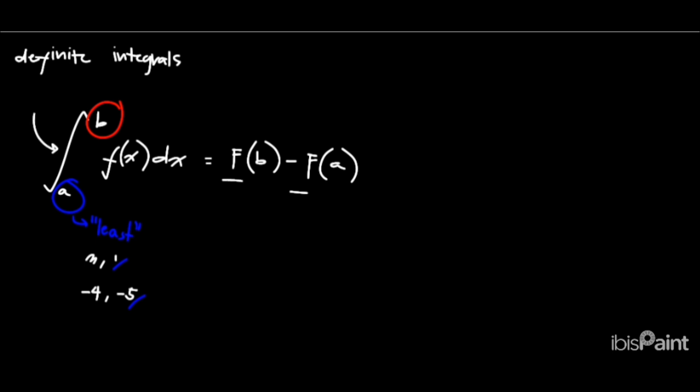The symbols F(a) and F(b) refer to the antiderivatives of f(x), meaning they are the original functions whose derivative is f(x).